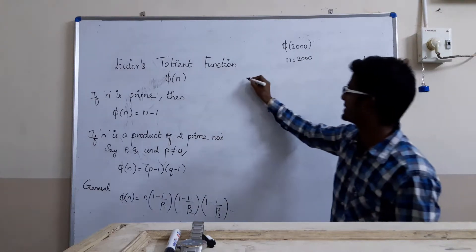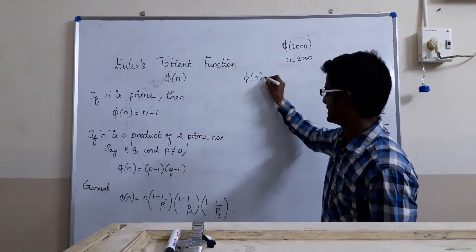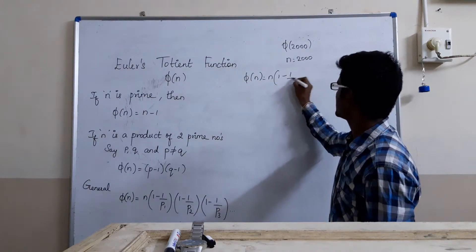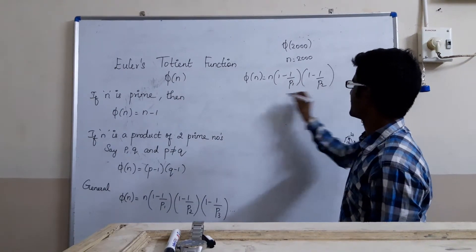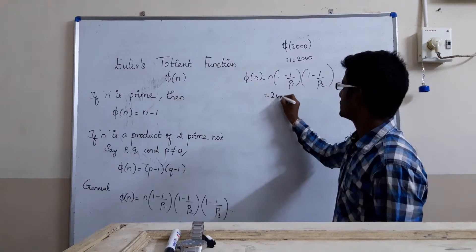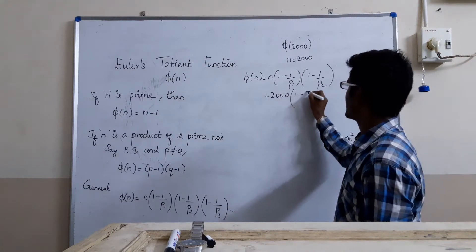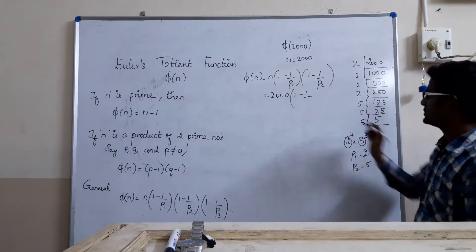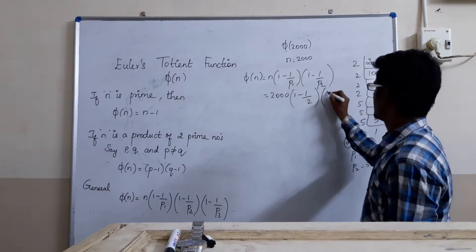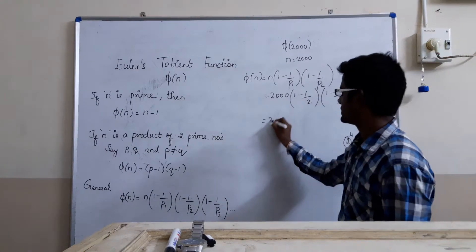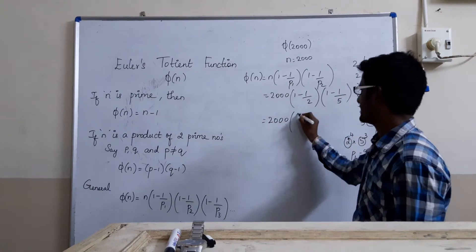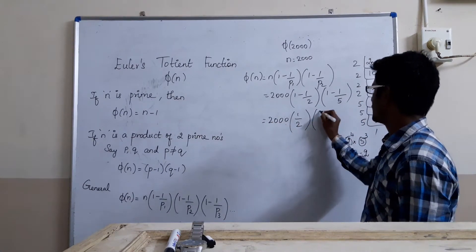We will apply that in the general equation. So phi of n, which is equal to n into (1 minus 1/p1) into (1 minus 1/p2). Number n is equal to 2000. 2000 into (1 minus 1/2) into (1 minus 1/5), which is equal to 2000 into 1/2 into 4/5.